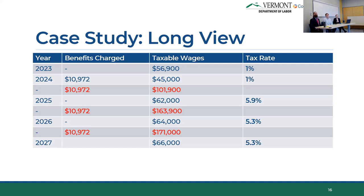Now, what happens if you do have a benefit claim made against you? Suppose the part-time administrative staff member left, putting you on the hook for $10,000 worth of charges. Making it through 2024 with no claims, then a claim in 2025 — still at the 1% tax rate. But that one claim for a part-time employee bumped up the tax rate to 5.9% looking forward. Then in 2026, 5.3%, and in the third year also 5.3%, because that claim stays around in the three-year rolling average.